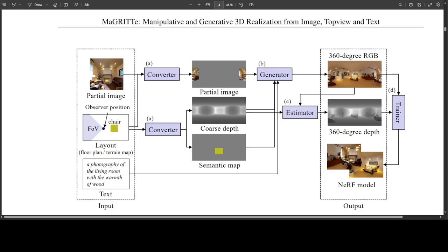If you look at this diagram, this is the overview of this proposed method which I have just explained, and it is to generate 360-degree RGBD and NeRF models from a partial image, layout, and text prompt.